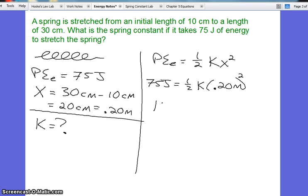We solve for K, and we get our spring constant to be 3,750 newtons per meter. So it's a very strong spring. This is probably more of an industrial spring versus that spring in your pen.